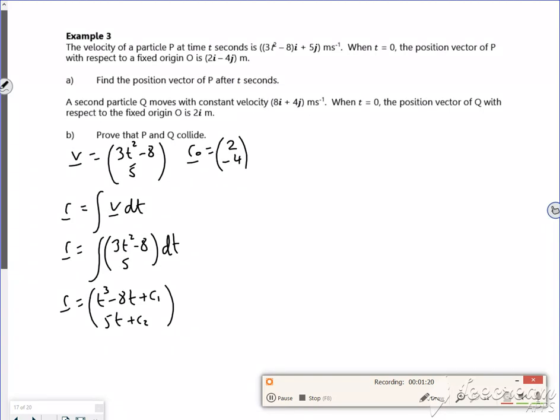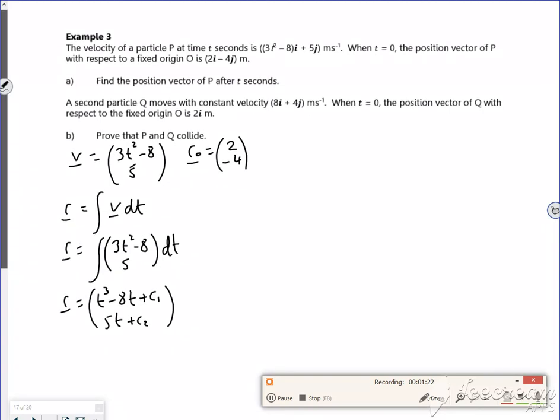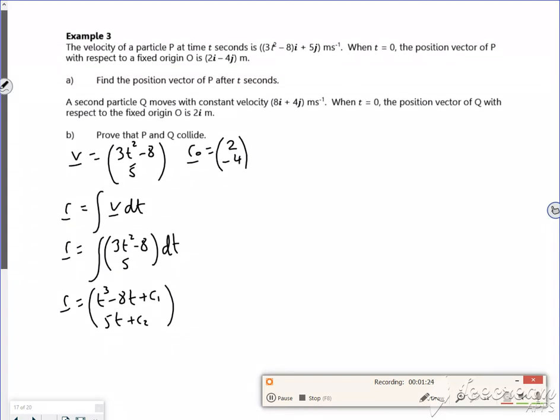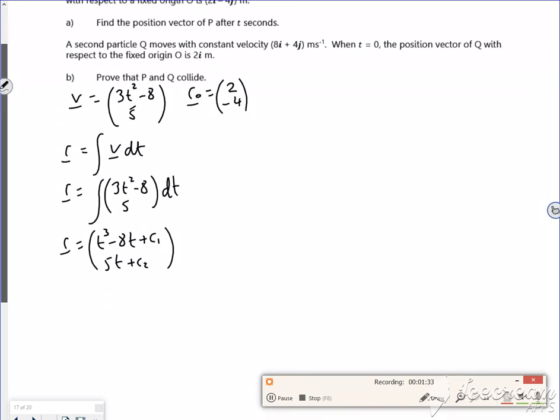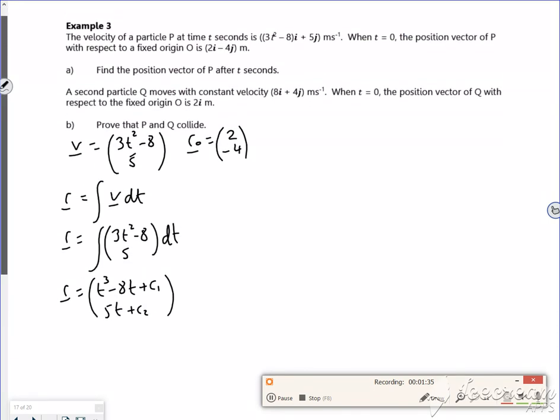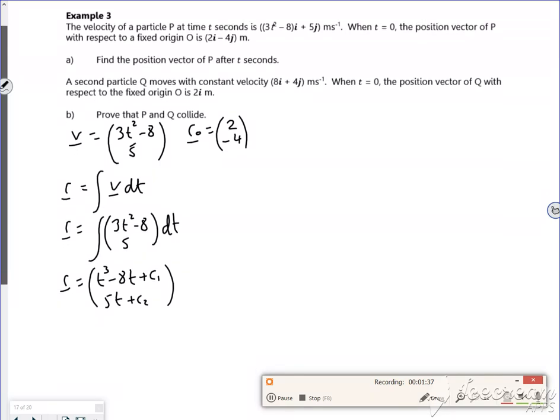So I'm just going to find where it's gone and I'm going to add on the start point separately. Well I can actually use the t is 0, can't I? So I could use the t is 0 and the r is, so I'll use that position vector. So t0 and it's, what is it, 2 minus 4.